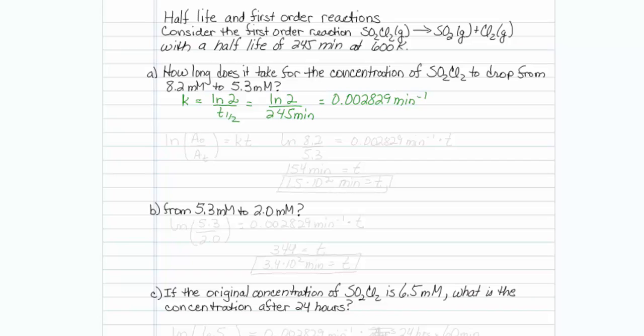Now the second piece says that we can use the formula natural log of original concentration over concentration at some time T is equal to KT. We would like to solve for time, T. So we will write in our original concentration is 8.2.